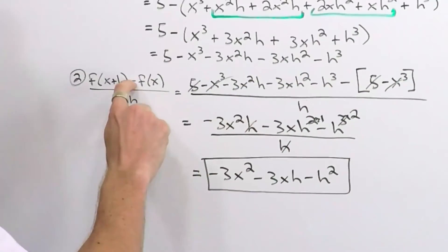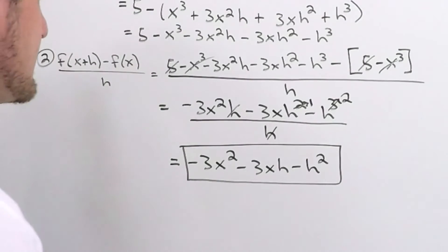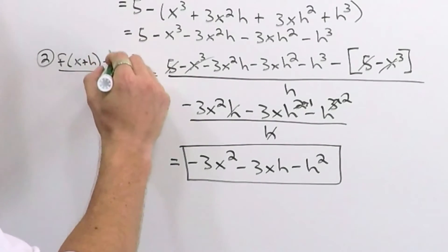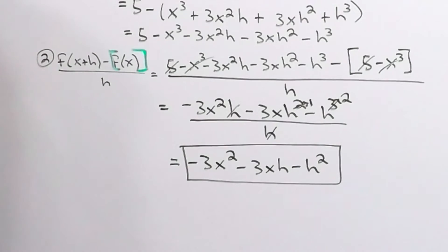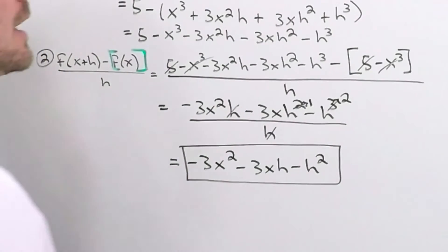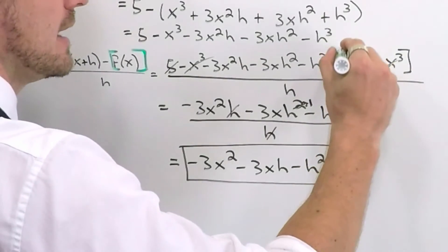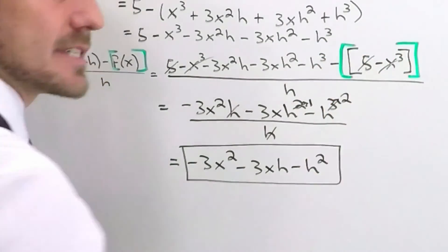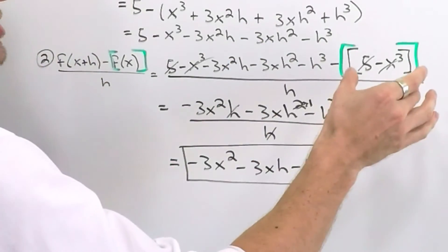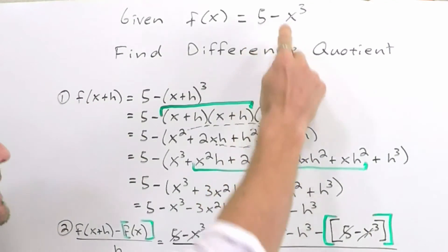Then we're going to go and subtract the original. And the cautionary tale always is, just throw a set of brackets or parentheses around the original. So you subtract each part, otherwise you're probably going to get it wrong. So here we put the minus and a parentheses or a bracket you can stick in. And the original function will go inside, which of course was five minus x cubed.